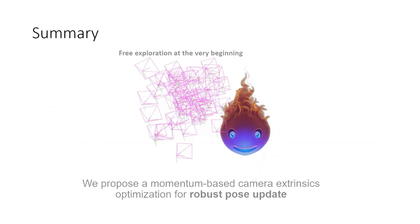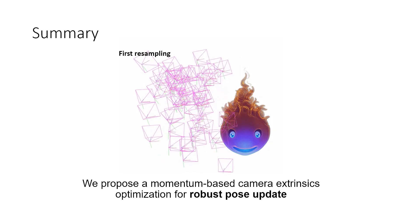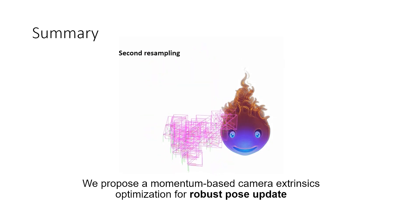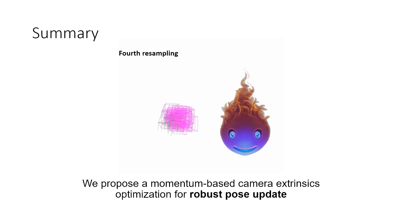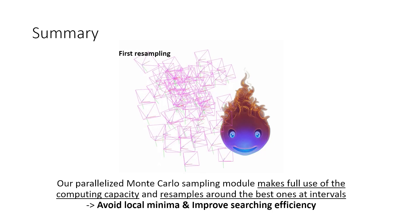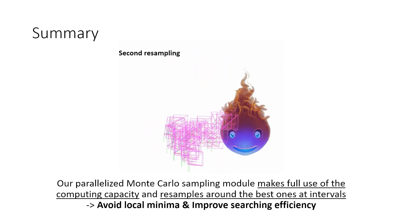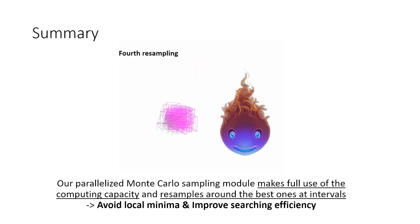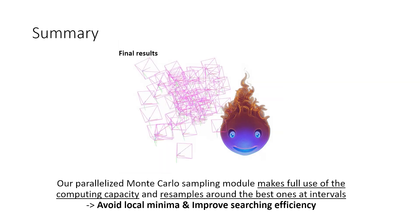In summary, we propose a momentum-based camera extrinsics optimization method to solve the pose estimation problem given an image and a trained NeRF model. Our parallelized Monte Carlo sampling module makes full use of the computing capacity and resamples around the best hypotheses at intervals, allowing our method to avoid local minima and improve searching efficiency. Thank you so much for your time!